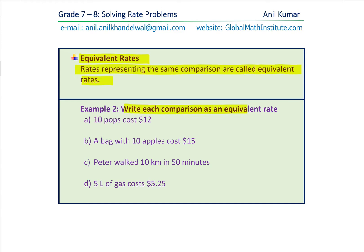Write each comparison as an equivalent rate. First: 10 pops cost $12. If 10 cost $12, then 20 will cost $24 — double the amount. You could also do 5 will cost $6. That could also be fine.